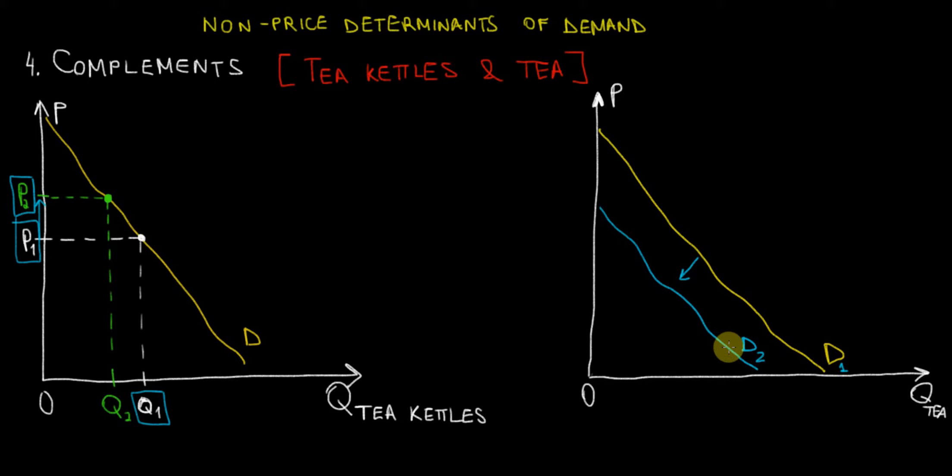This means that at a given price level, we will have less quantity demanded for tea than before. Previously we had Q1, whereas now we only have Q2. What I want to make sure you understand is that on the demand curve of the first product, the tea kettles in this case,